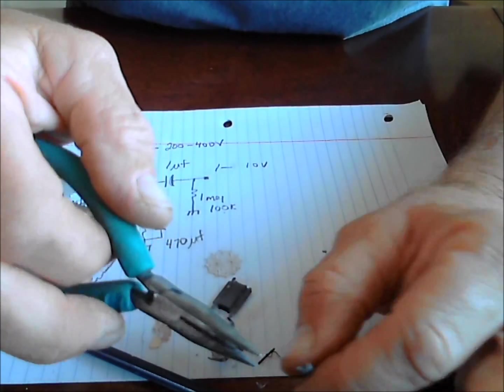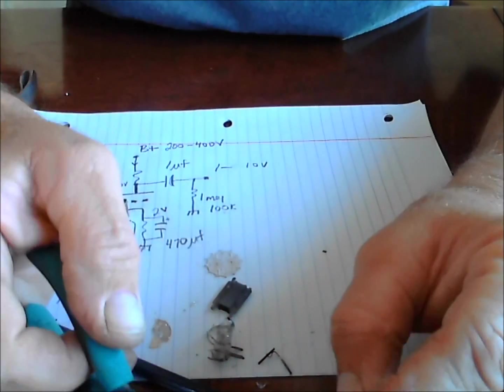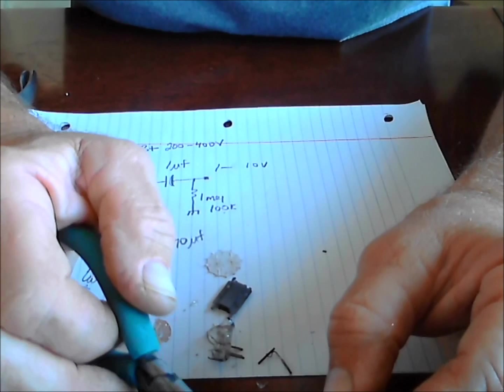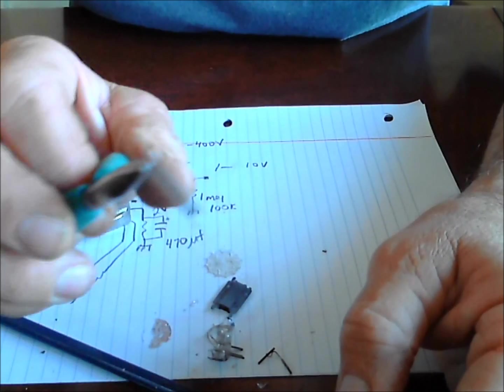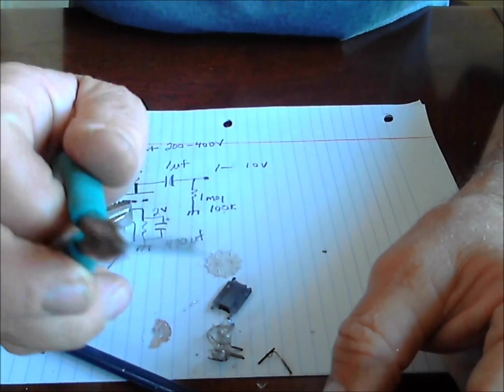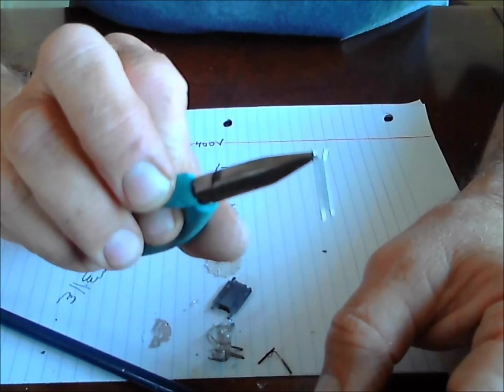It is also interesting to note that with almost all of the 12 series, the 12AU7 and the 12AX7 share identical cathodes and identical plates, and only the grid is different. It's the grid that determines the gain of the tube.